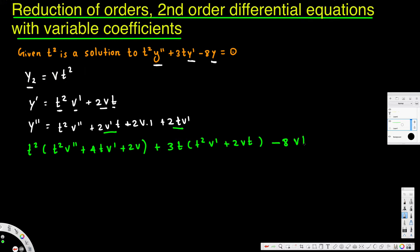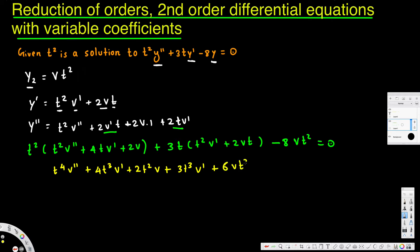For the minus 8y term, we substitute v times t squared. Now expanding all terms: t squared times y double prime gives t to the 4th v double prime, plus 4t cubed v prime, plus 2t squared v. Then 3t times y prime gives 3t cubed v prime plus 6vt squared. And minus 8y gives minus 8vt squared. Setting everything equal to zero.